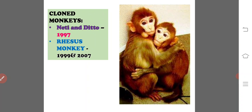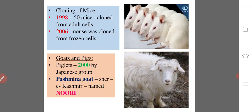Neeti and Ditto were two monkeys cloned in 1997. Rhesus monkeys were cloned in 1999 and 2007. In 1998, 50 mice were cloned from adult cells at the University of Hawaii. In 2006 in Japan, a mouse was cloned from frozen cells of a dead mouse that had died 16 years ago. Piglets were cloned in the year 2000 by a Japanese group. The Pashmina goat was cloned at the Sher-e-Kashmir University of Agricultural Sciences and Technology of Kashmir in 2012 and named Noori.